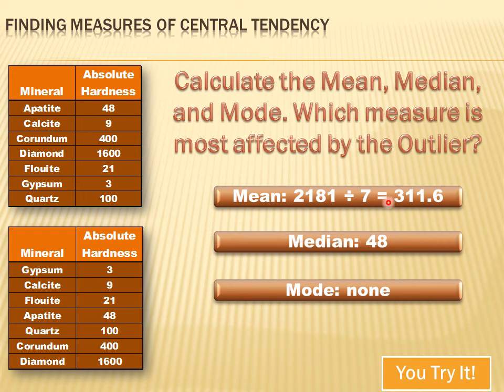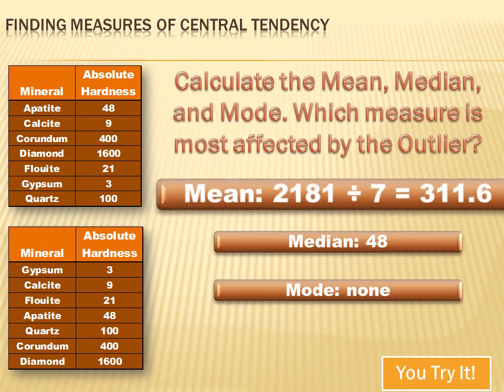We have a mean of 311.6 and a median of 48 — that's a huge difference. The reason for this great big difference is clearly the outlier: diamonds are a whole lot harder than any other mineral. So which measure of central tendency was most affected by the outlier? The mean.